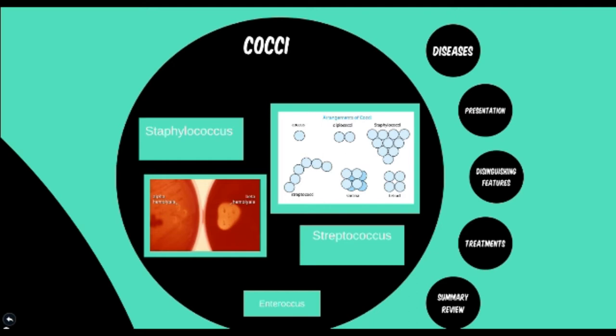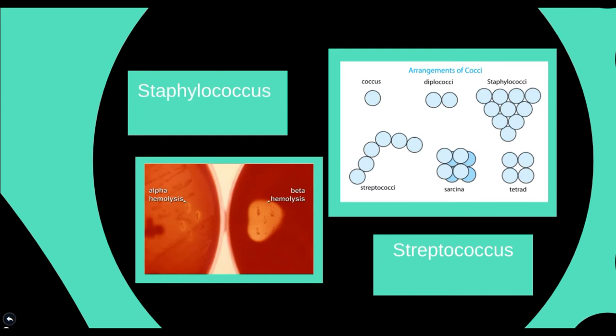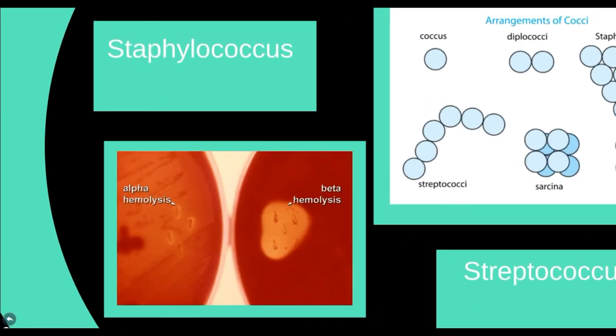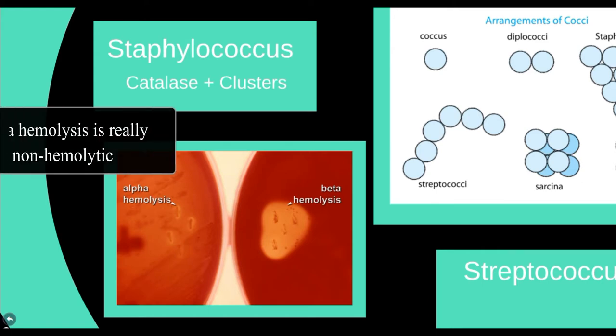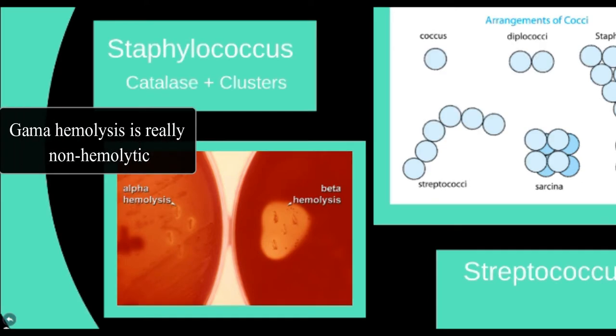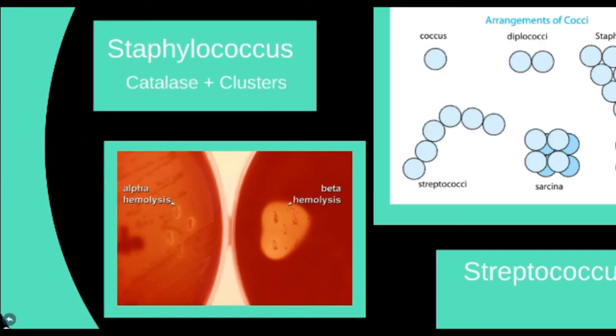Staphylococcus and streptococcus lead to a wider variety of ailments. We also have enterococcus, which is a less common type of bacteria but still causes severe human disease. We can use specialized tests such as hemolysis testing to differentiate between these different species within the same family. There's alpha, beta, and even gamma hemolysis, which basically describes the way the bacteria can break down red blood cells when put on an agar plate.